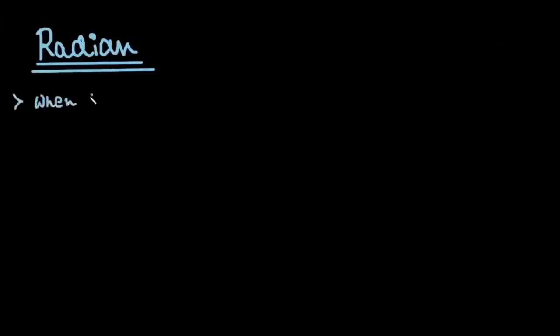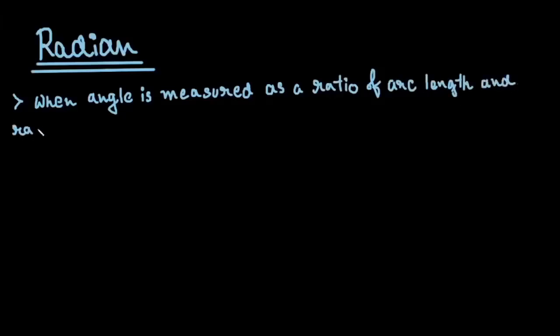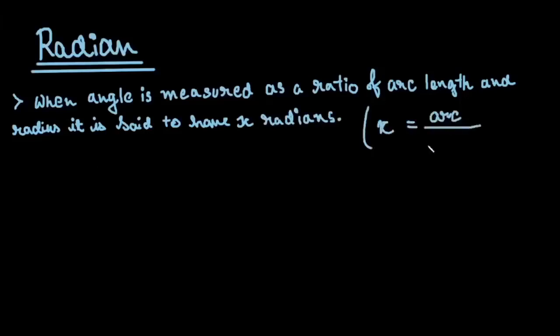Hey, in this video I want to teach you what is radian. When angle is measured as the ratio between arc length and the radius of the circle, it is said to have X radians, where X is equal to the ratio of the arc length and radius.